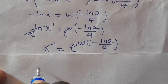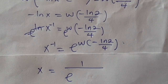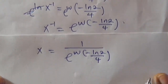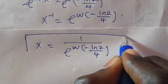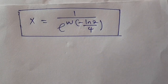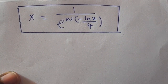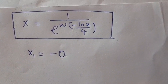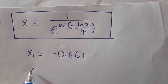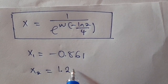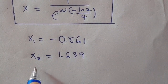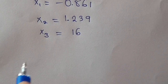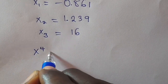So therefore guys, this is the final answer: x equals e to the power of W of minus ln(2) divided by 4. I have got three values for the question: x1 equals minus 0.861, x2 equals 1.339 — and this is the real solution — and x3 equals 16. We can prove this by recalling that x raised to power 4 equals 2 raised to power x.